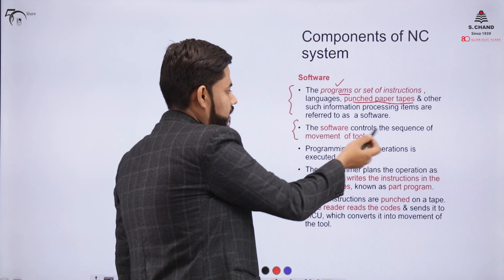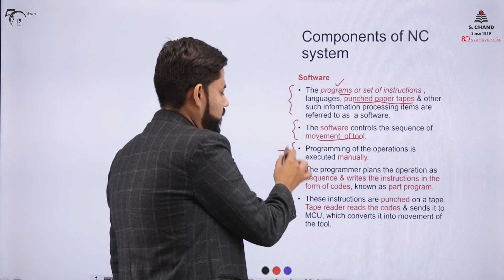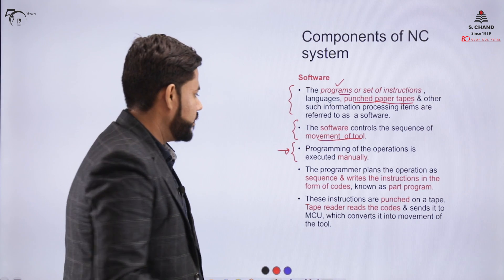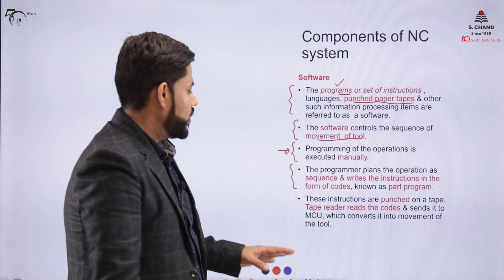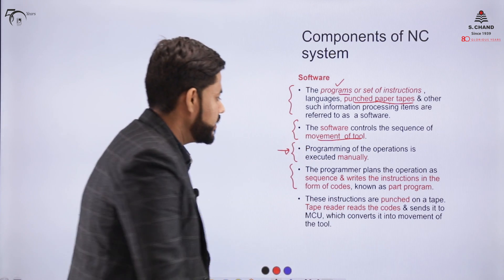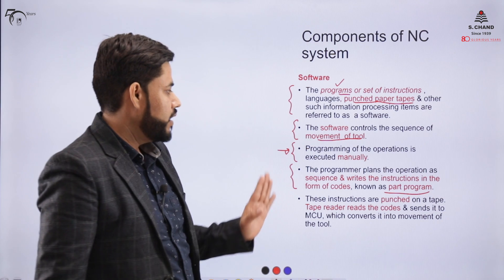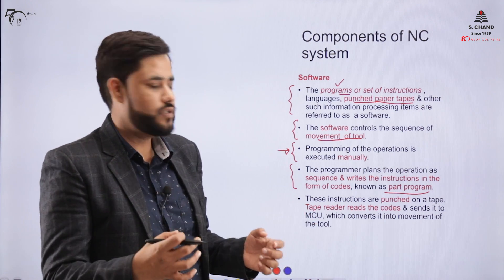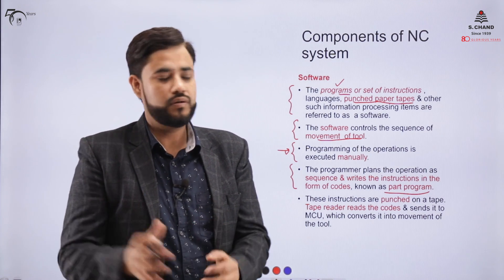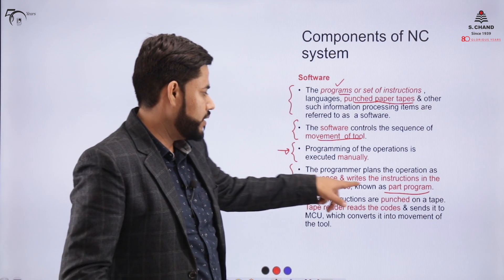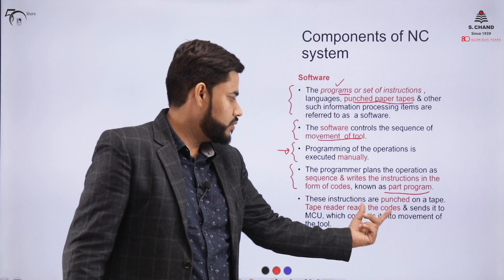The software controls the sequence of movement of the tool. This programming is done manually — the programmer plans the operation sequences and writes the code of instructions, called the part program. In the part program, we list down a sequence of operations, which are converted into code. That code is punched into the tape, and the tape reader records the code and sends it to the MCU.